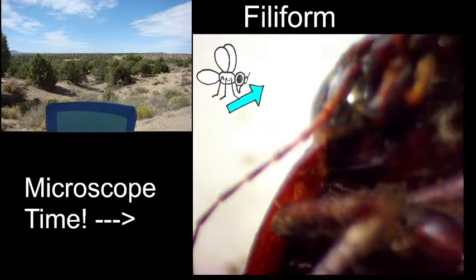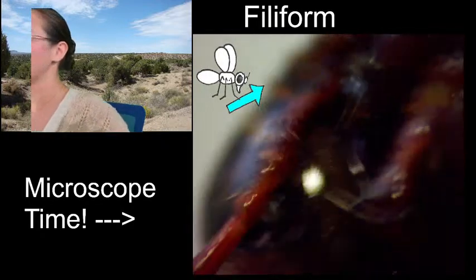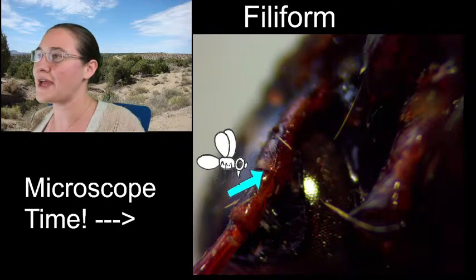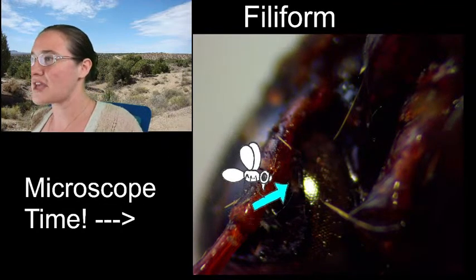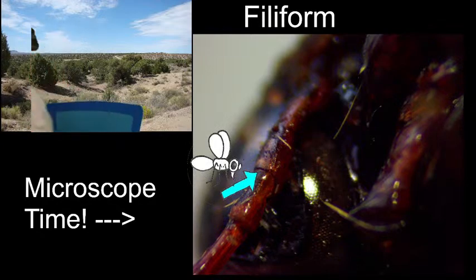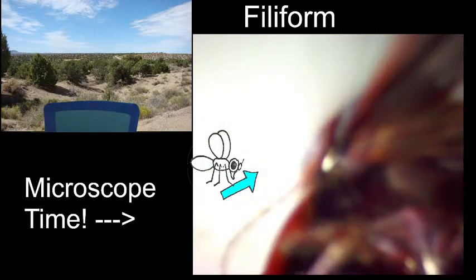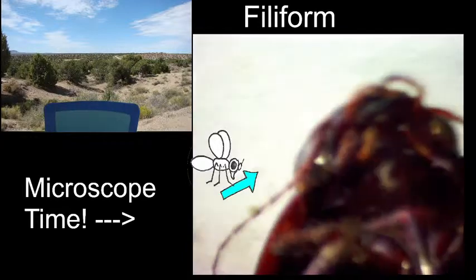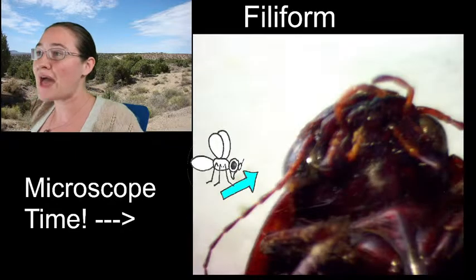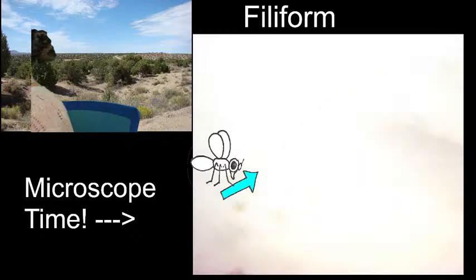When you look at the first segment, the scape, it doesn't just meet the next segment evenly all the way around — the scape has two pegs on either side of the pedicel it's using to hold onto that segment. The scape is the name of the first segment of the antenna, and the pedicel is the name of the second segment.